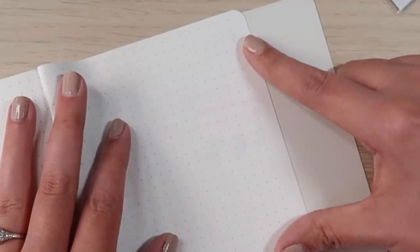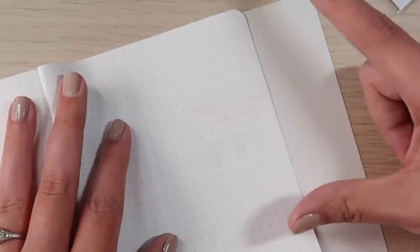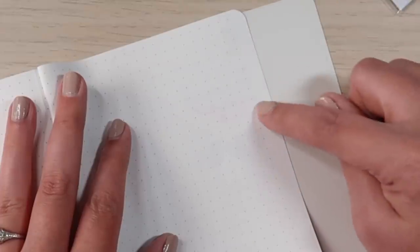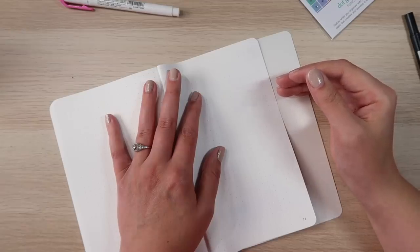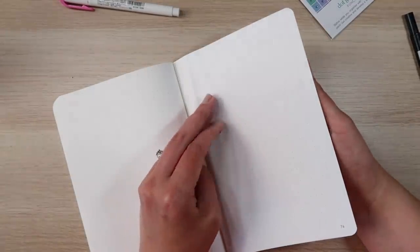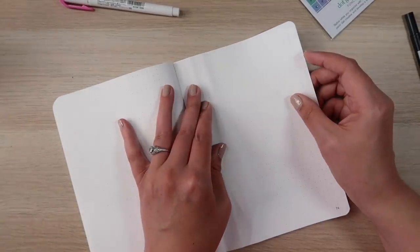When it comes to bleeding or ghosting, there isn't any bleeding. There is definitely a little bit of ghosting with the mild liners and the Tombow, but it's not very much. You can see it, but it's not as intense as you might think it would be, especially considering some of the ghosting I've seen on other Erin Condren products.